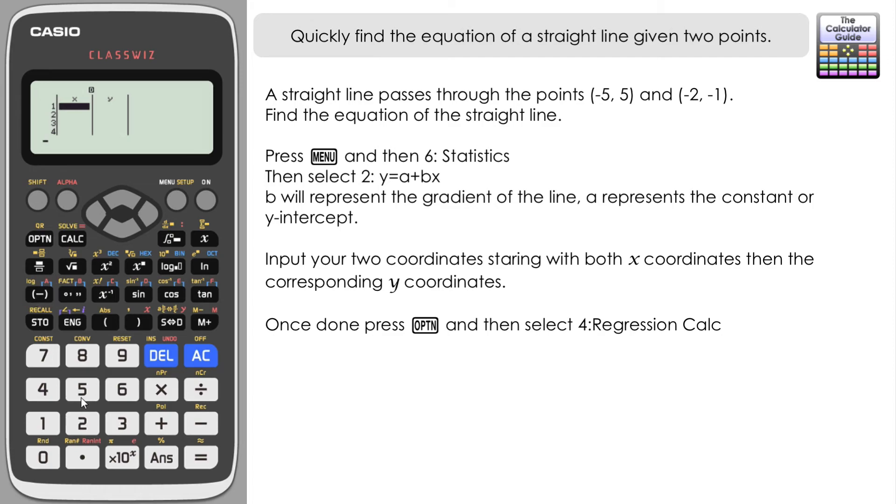Once we've got our options of x and y here, we're going to input the coordinates carefully. So input your x's first: -5, -2, there's our x coordinate. And then our corresponding y coordinate, be careful to match the correct ones there. So 5 for the y, so that's (-5, 5), and then -1, so that's (-2, -1).